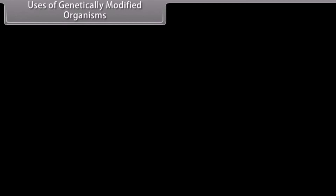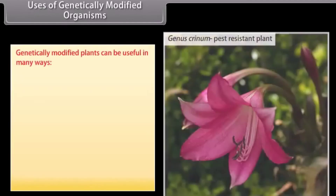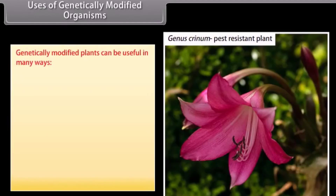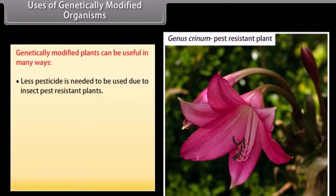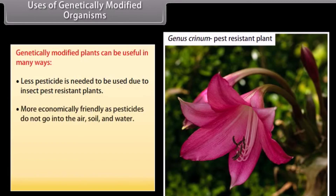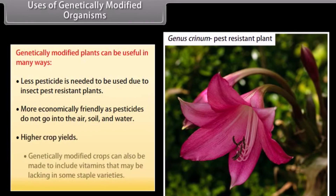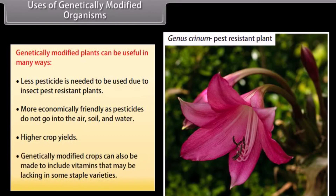Uses of genetically modified organisms. Genetically modified plants can be useful in many ways. Less pesticide is needed due to insect pest resistant plants, making them more environmentally friendly as pesticides do not go into the air, soil, and water. Higher crop yields are also achieved.